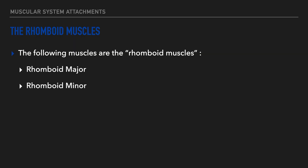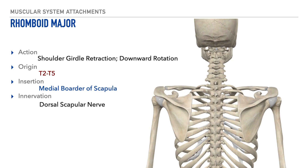Now let's explore a final group of muscles referred to as the rhomboids, which includes the rhomboid major and the rhomboid minor. First up is the rhomboid major. Its actions include shoulder girdle retraction and shoulder girdle downward rotation. Its origin is on the spinous processes of T2 through T5, and we'll show those origin points here. Its insertion is on the medial border of the scapula just underneath the spine of the scapula, and lastly its innervation is the dorsal scapular nerve.